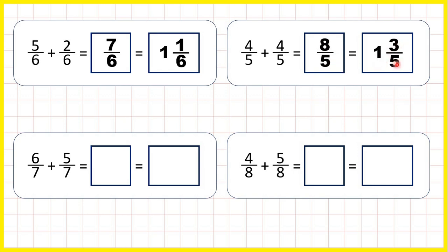Which is 1 and 3 fifths as a mixed number, because 8 divided by 5 is 1 remainder 3, and the denominator stays the same.